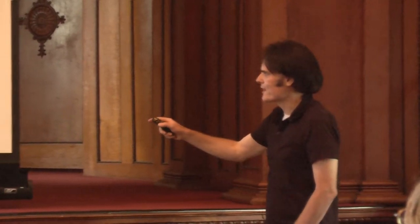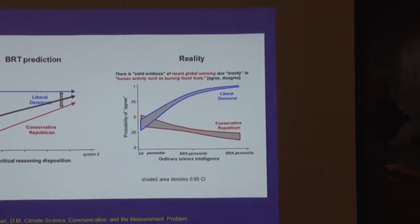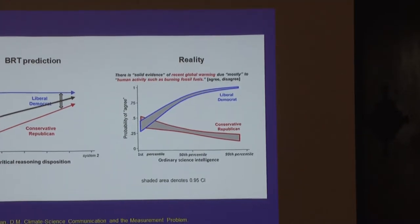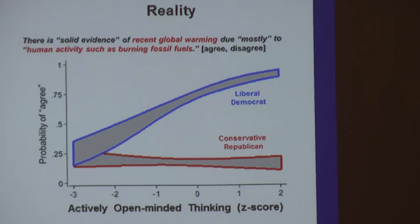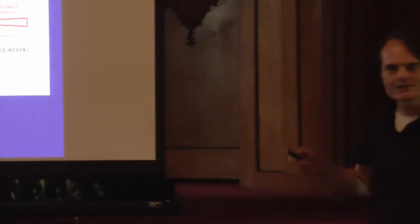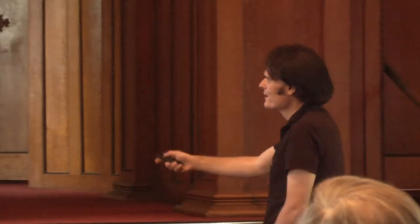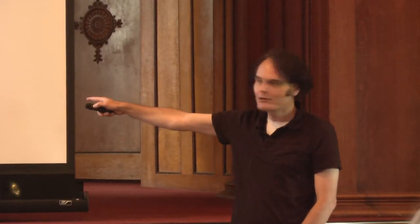This is a robust finding. Whether you ask if climate change is happening, whether humans are responsible — you get the same perverse effect from science comprehension. You get the same perverse effect using the actively open-minded thinking scale, which is supposed to measure a disposition to re-examine preconceptions in light of evidence. The cognitive reflection test — kind of the gold standard for assessing whether people use system-one or system-two reasoning — shows the same thing. Other politically charged risk issues like gun ownership and fracking show the same kind of effect, with polarization increasing as people become better at comprehending science. This is not what the bounded rationality theory would predict.